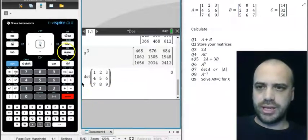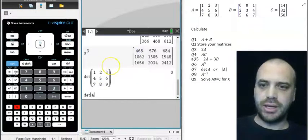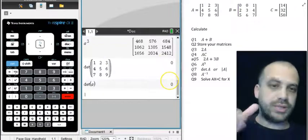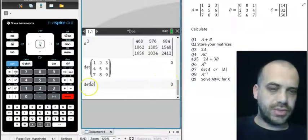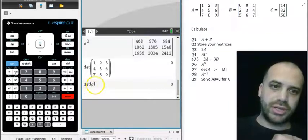Or instead we can do menu, matrix, determinant, matrix A, close the bracket. And you can see the determinant of that matrix is zero. A determinant of a three by three matrix, really, really hard, very handy to do it on your calculator.